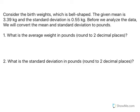We're now going to play with the empirical rule and the bell-shaped normal distribution. Consider the birth weights, which is bell-shaped. The given mean is 3.39 kilograms and the standard deviation is 0.55 kilograms. Before we analyze the data, we will convert the mean and standard deviation to pounds, because most of us are probably most familiar with weight in pounds.